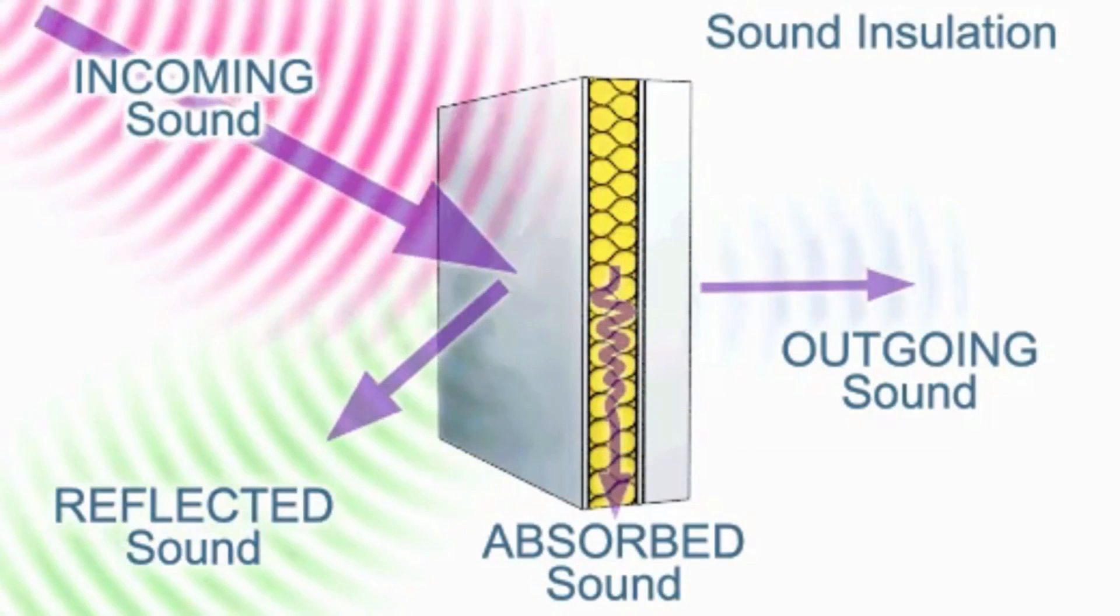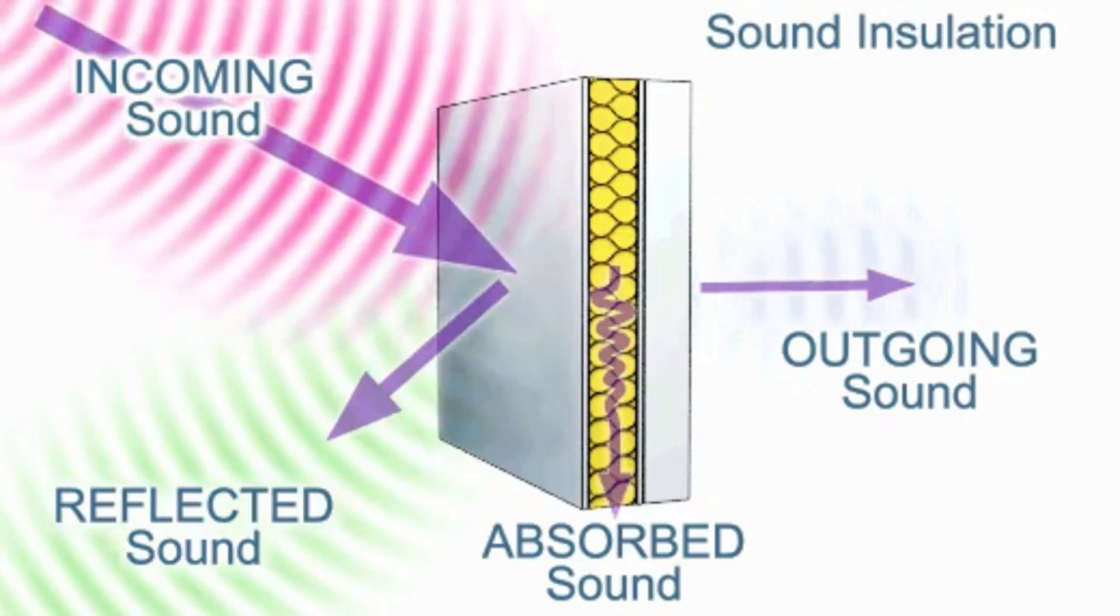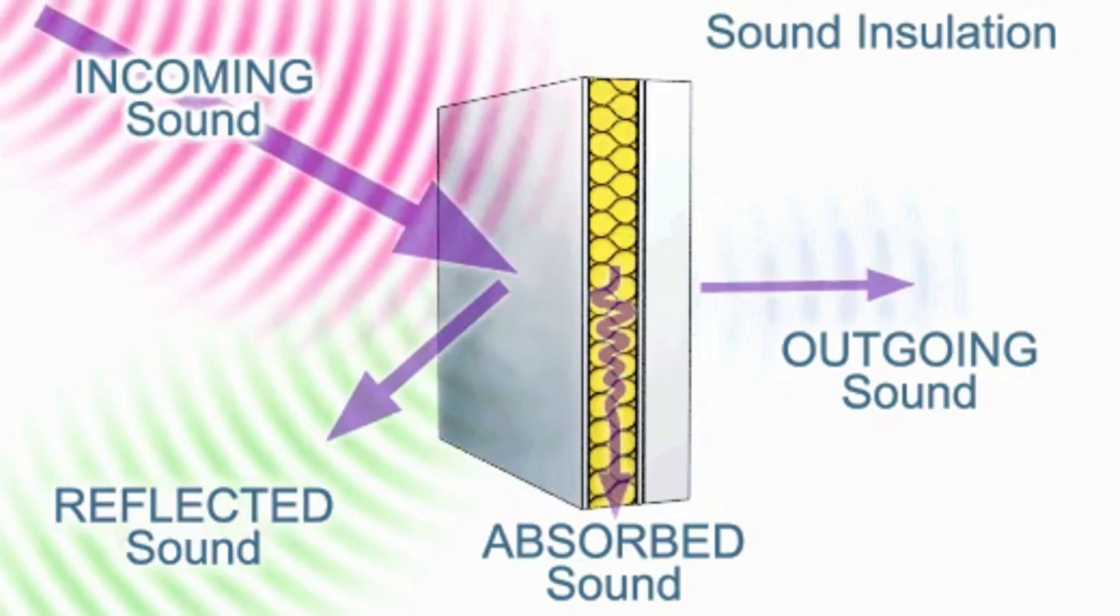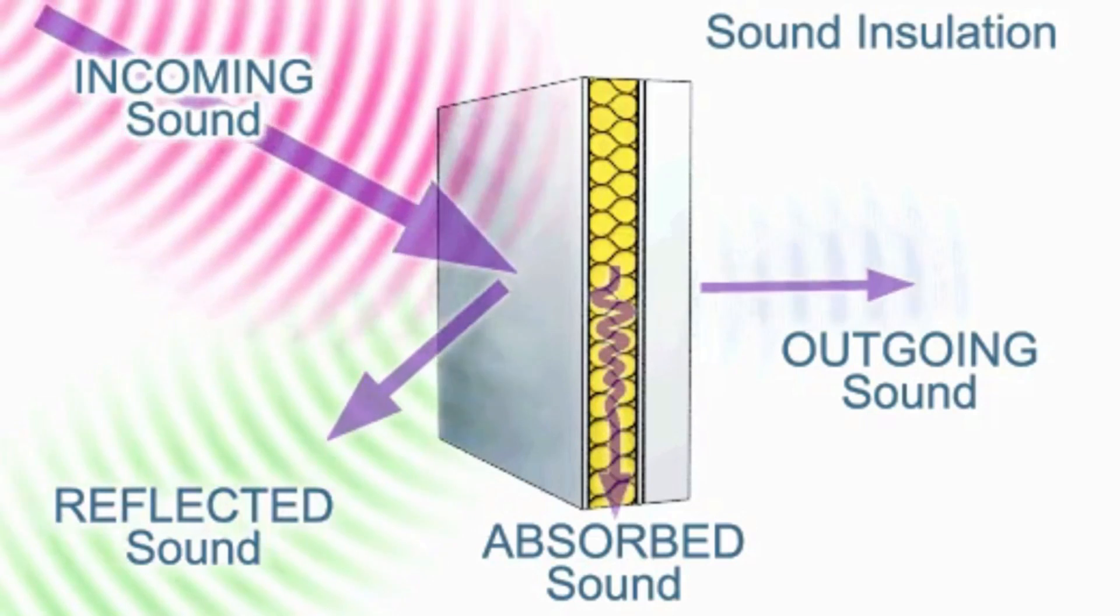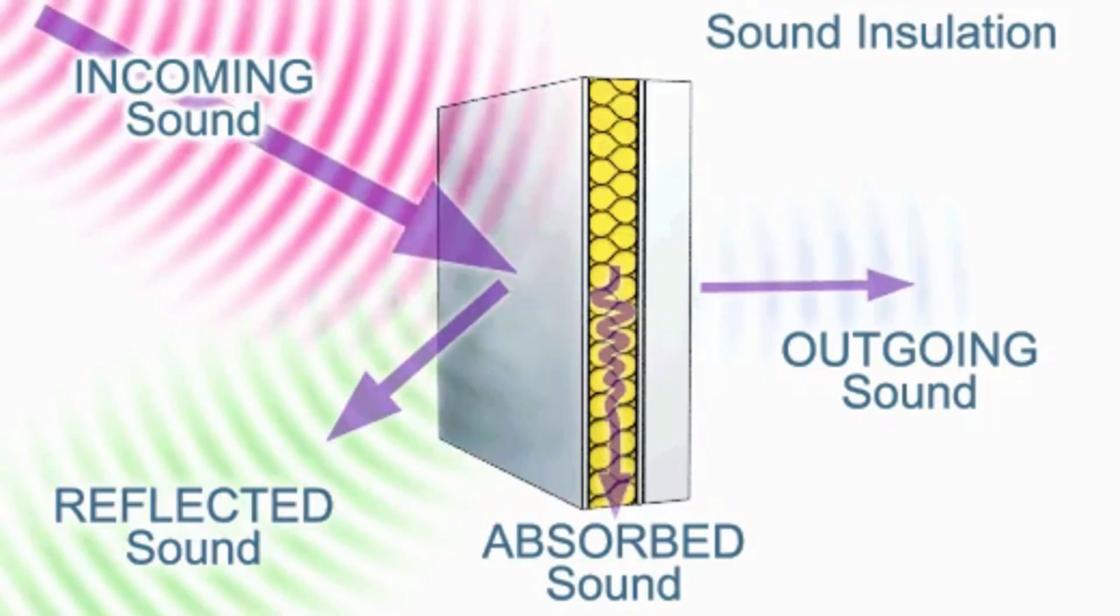The behavior of sound waves can also be affected by the presence of obstacles such as walls or objects in the environment. When a sound wave encounters an obstacle, it can be reflected, absorbed, or transmitted through the obstacle. This can have implications for the acoustics of a room or the ability to hear sounds in different environments.